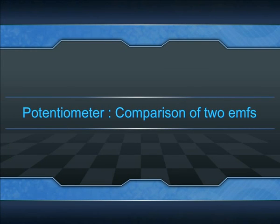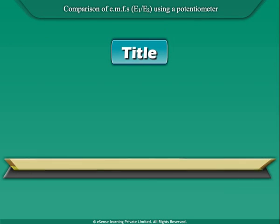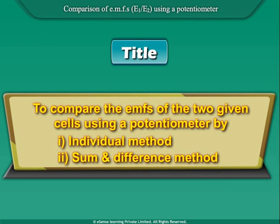Potentiometer: Comparison of two EMFs. Title: To compare the EMFs of two given cells using a potentiometer by (1) individual method and (2) sum and difference method.